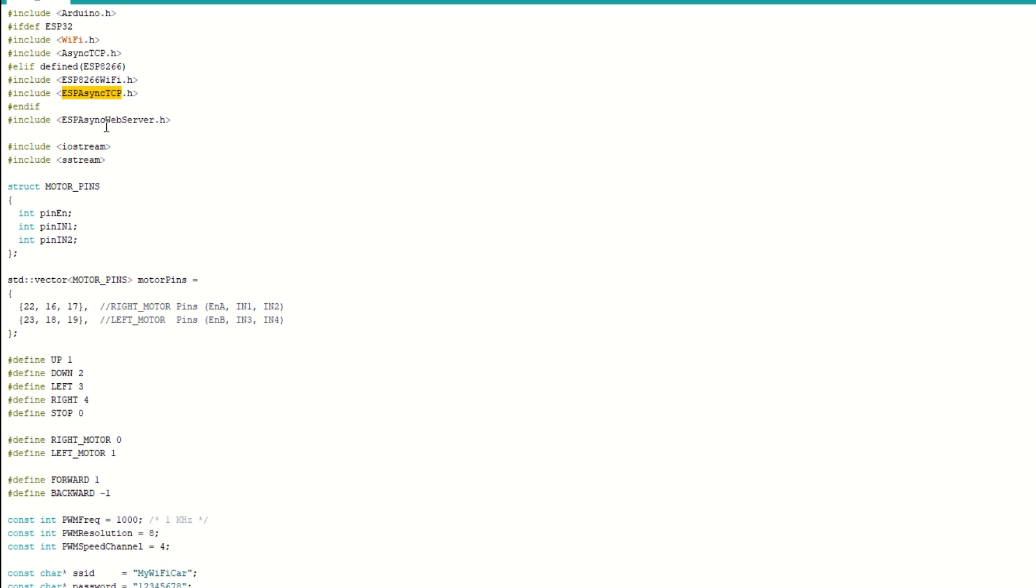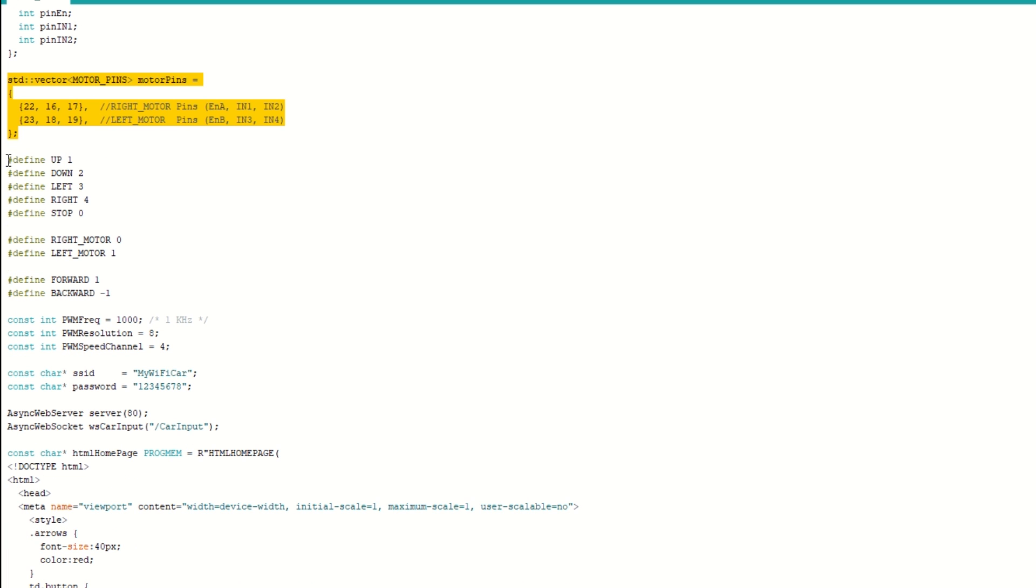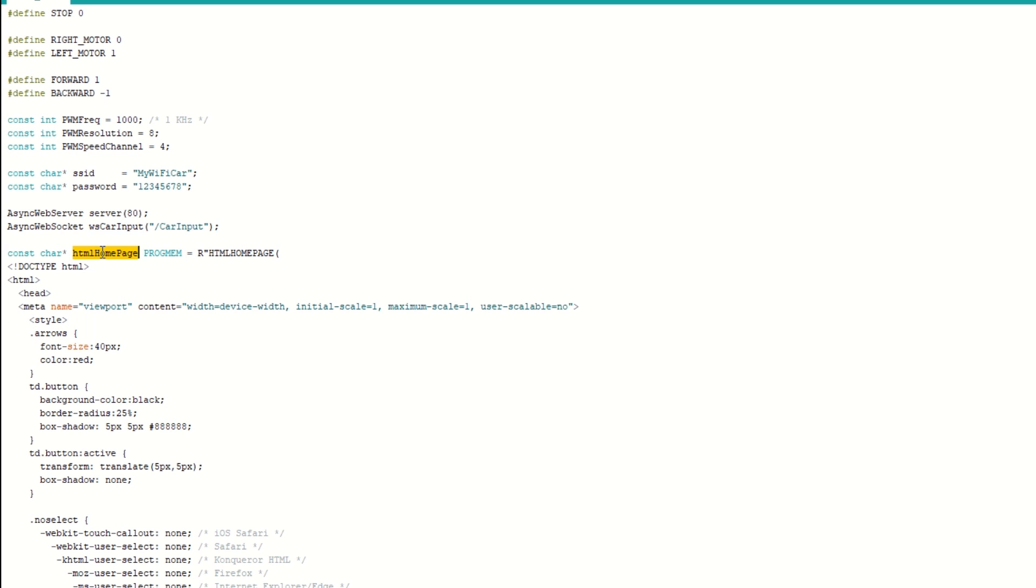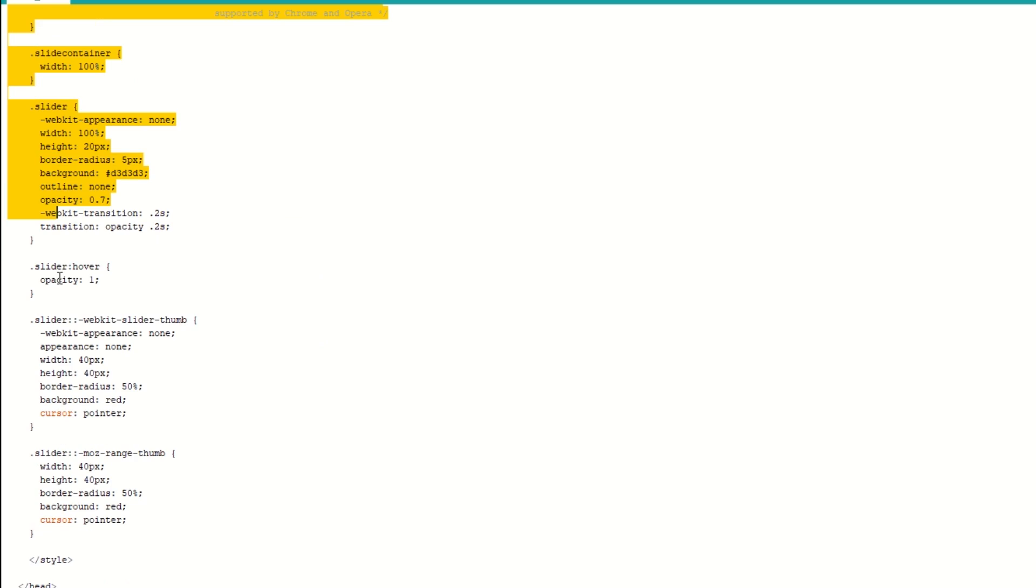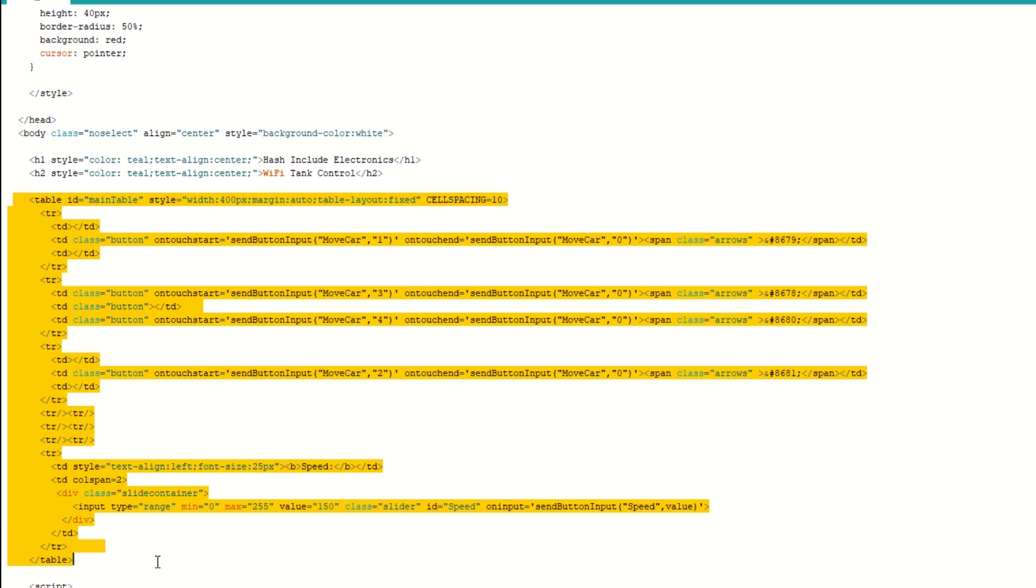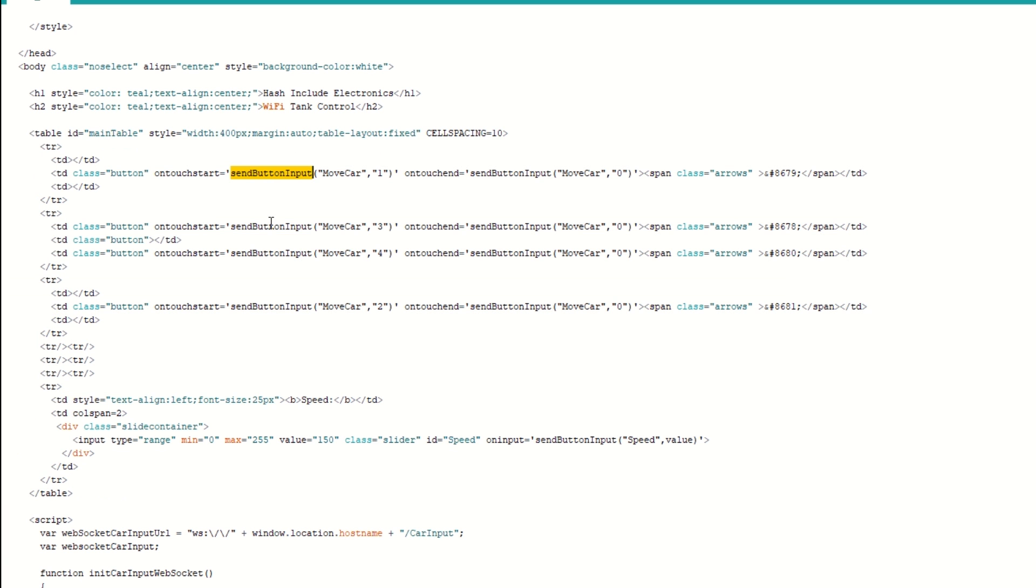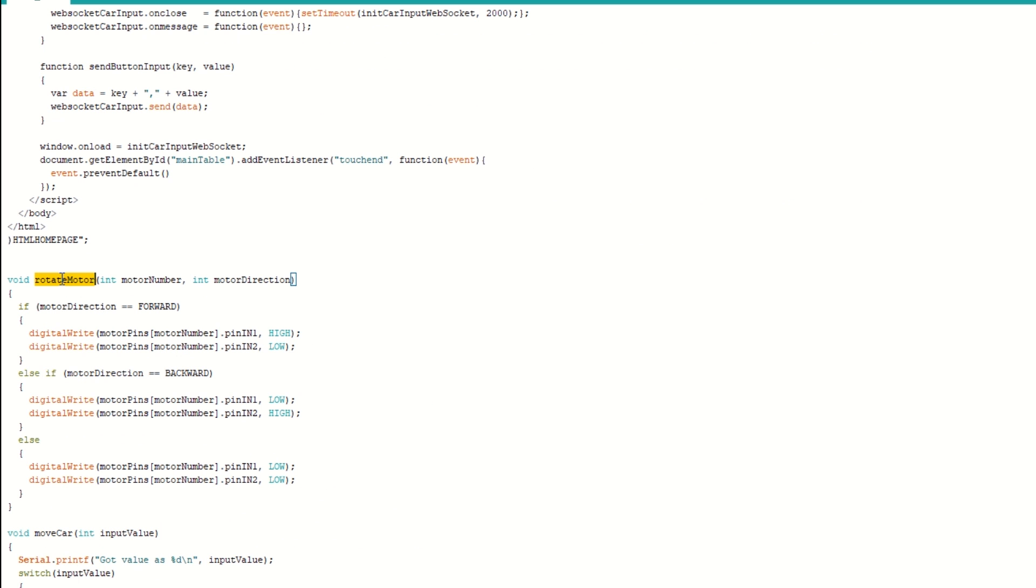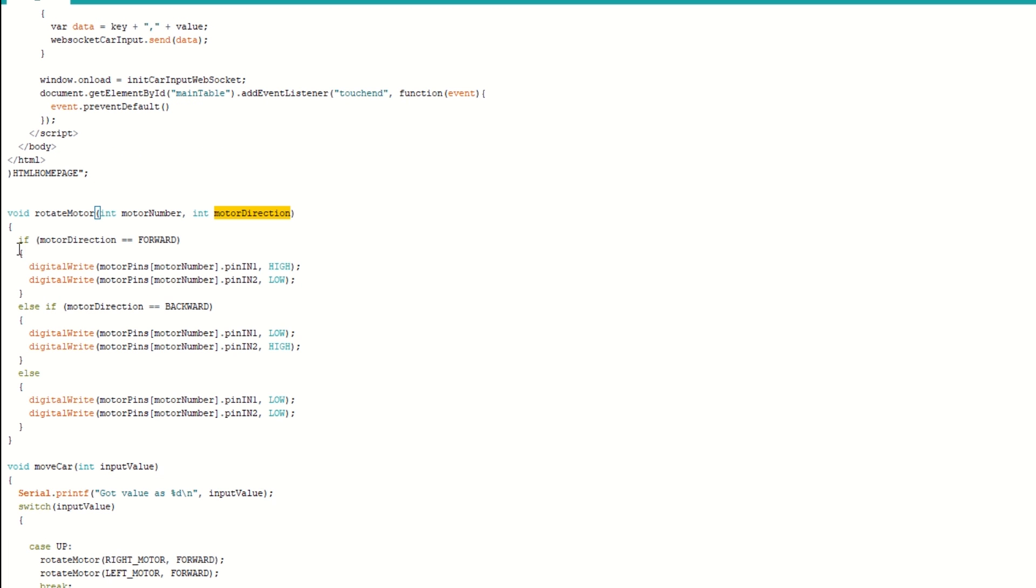Now we need to include the Async TCP library and Async Web Server library. We have assigned the right and left motor pins. We have defined constants for car movements. We have set the PWM frequency, resolution and channel for speed. We need to set the SSID and password for our ESP32 Wi-Fi. We have created a web server at port number 80. We will be using Web Socket for car input control. Then we have created an HTML page for our car control app and stored it in the HTML home page variable. This is the main page which will be displayed on mobile when we type the IP address. It has all the buttons to control the car. When any control button is pressed on mobile it will send a particular number to ESP32 using Web Socket. It has slider controls to control the speed of the car.